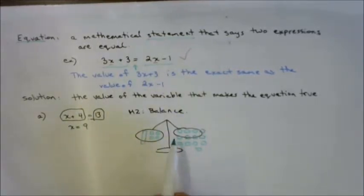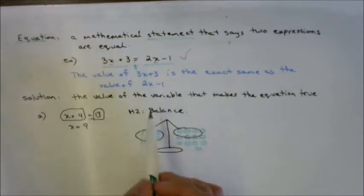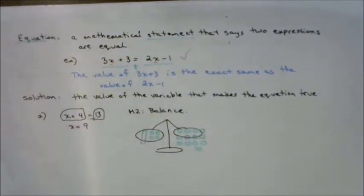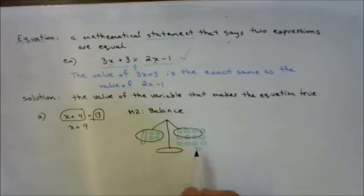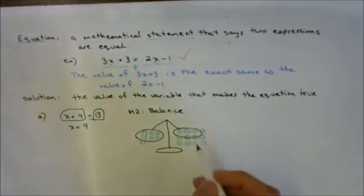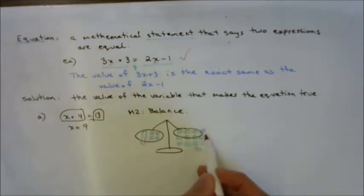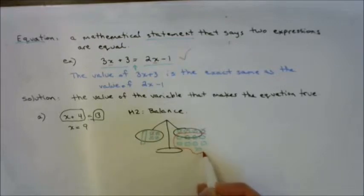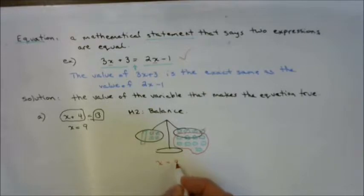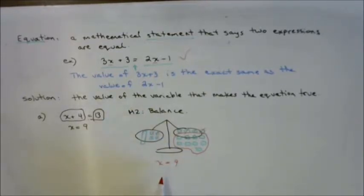They need to stay equal — they need to stay balanced. I've got 4 on the left and 4 on the right as unit tiles, so my x tile needs to compensate for all the remaining blocks. That means x must equal 9. This is a helpful way of thinking about keeping things balanced — if x were any other number, the scale would not be balanced.